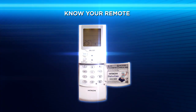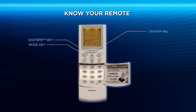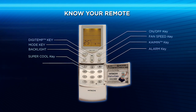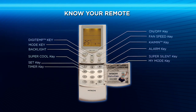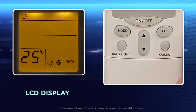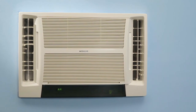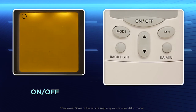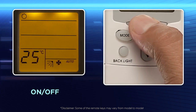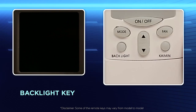How to use the AC remote for better and comfortable cooling. Use the remote control to switch the AC on and off, select the mode, set the temperature, and carry out several other functions. The LCD display on the remote indicates the selected operation mode. Press the on/off key to switch on or switch off your air conditioner. Use the backlight key to turn on the backlight of the remote for better visibility during day or night.